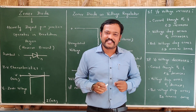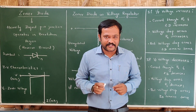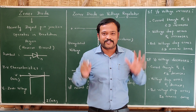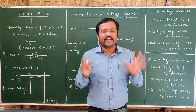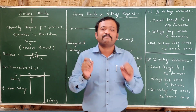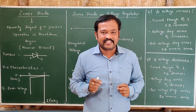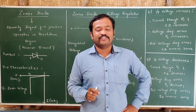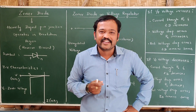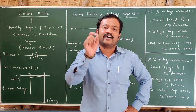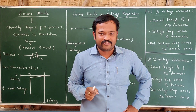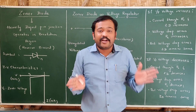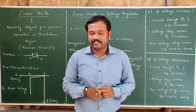Welcome to Part 6 of Semiconductors. In this section we will be studying about Zener Diode, which is a special purpose device. First of all, we shall understand what a Zener diode actually is. Zener diode is a diode itself, but it is heavily doped and it operates in the breakdown region.